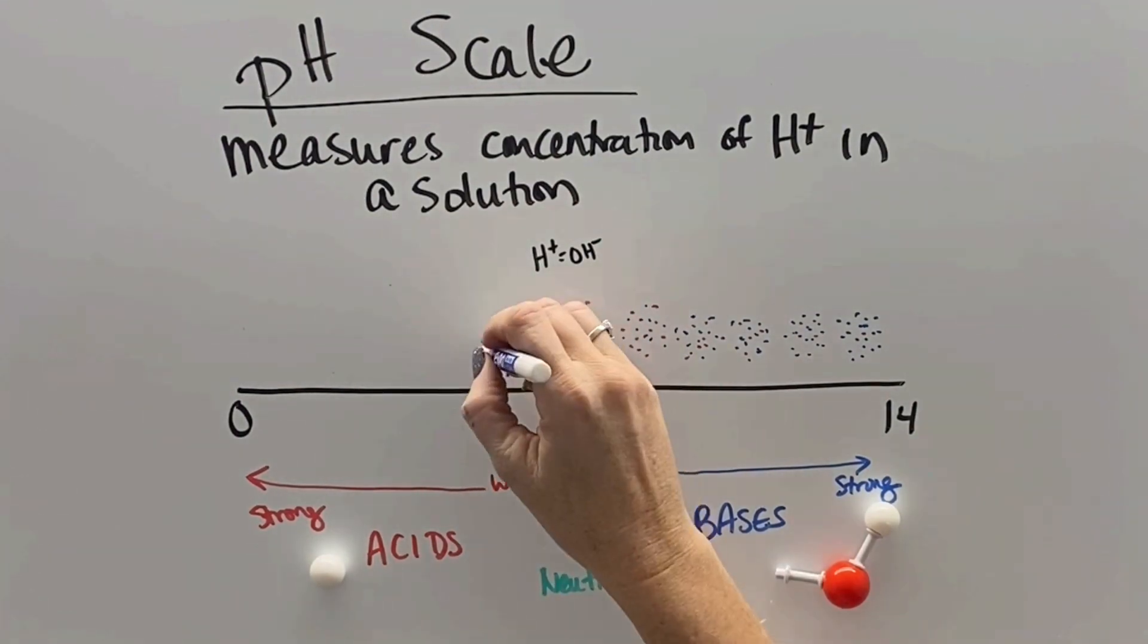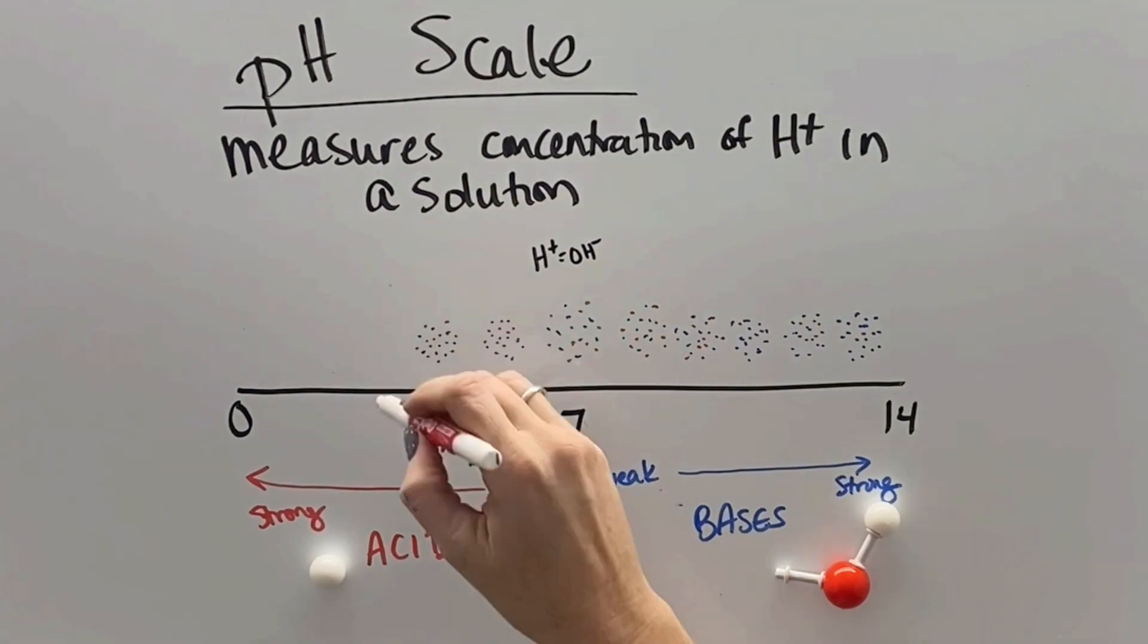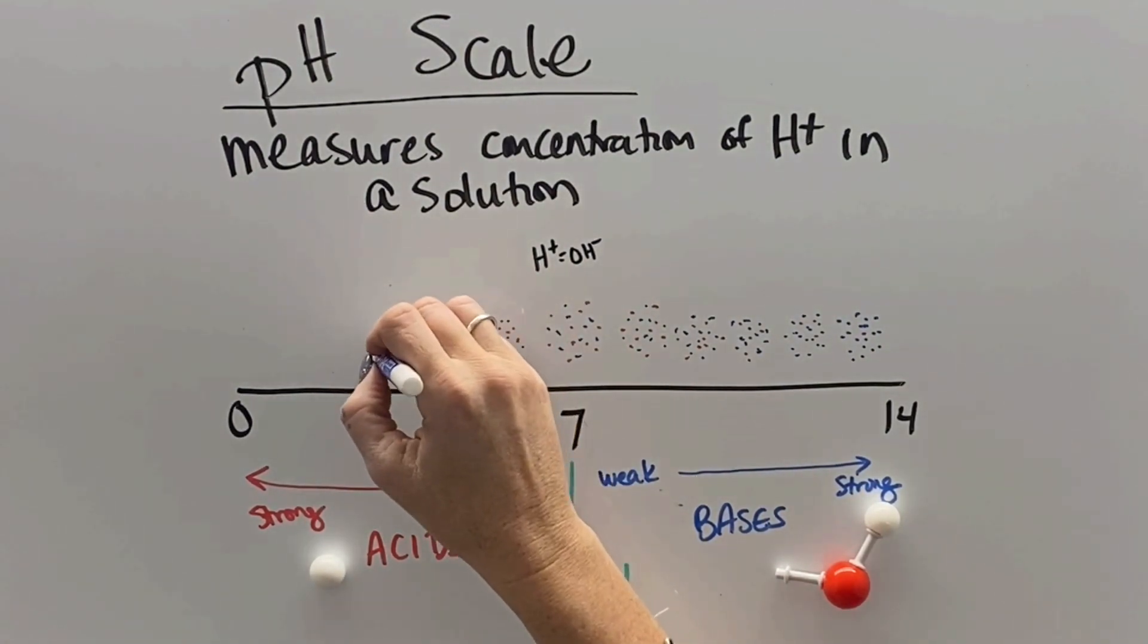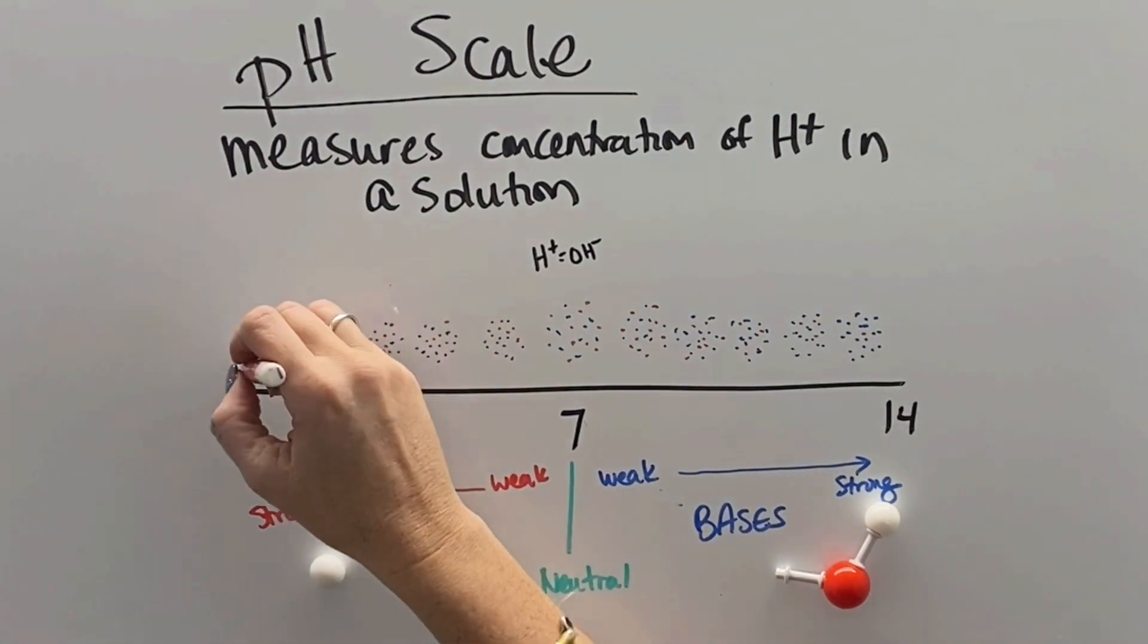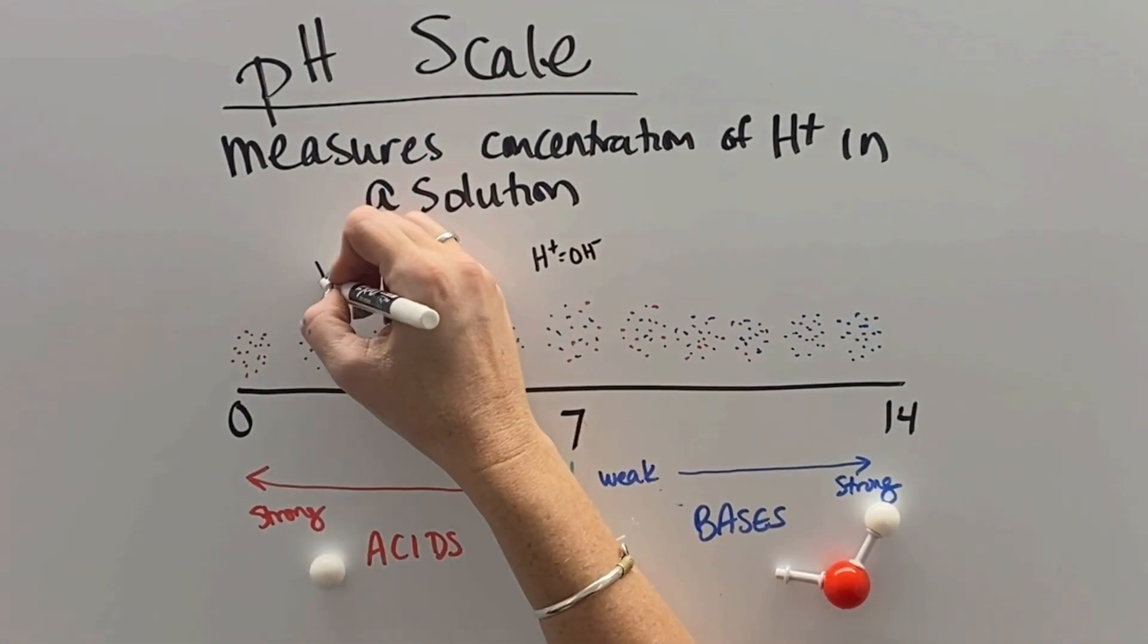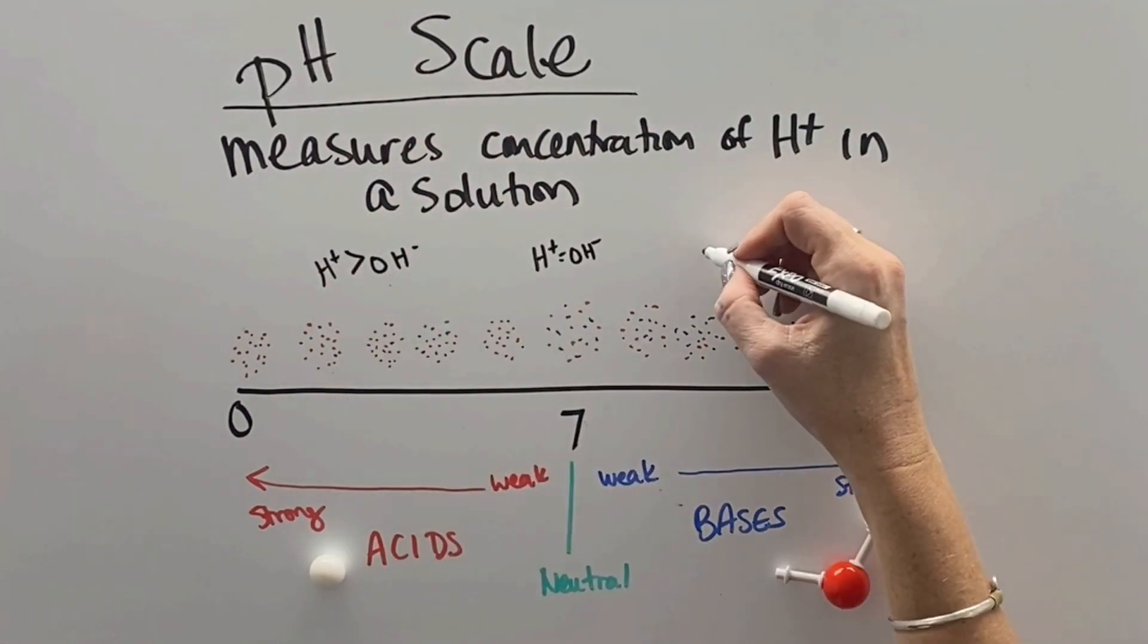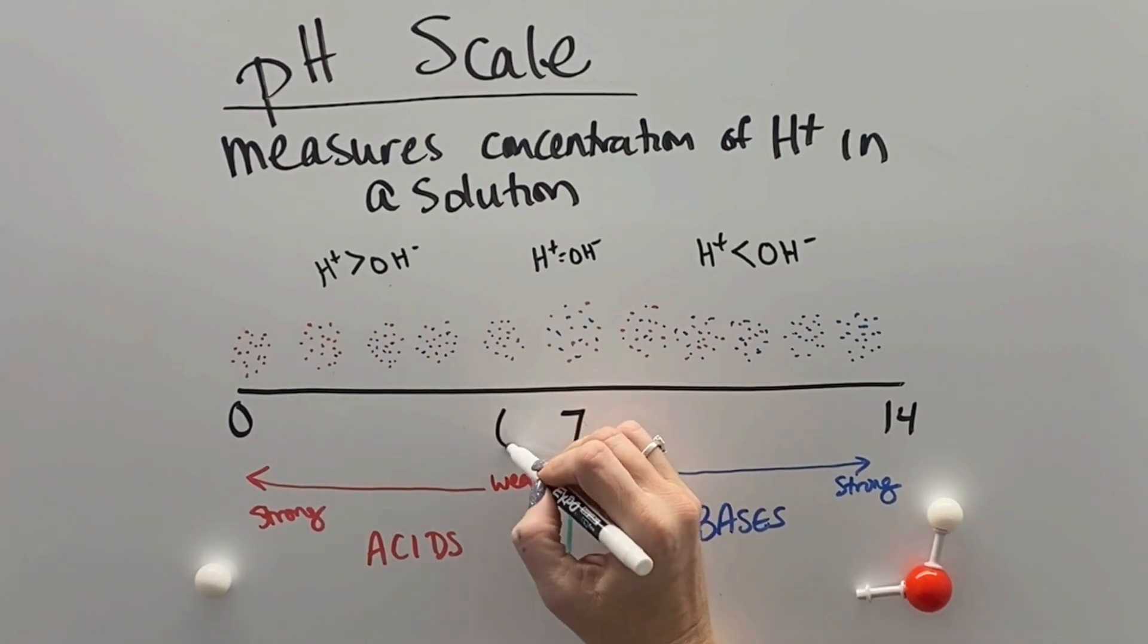And as we move the other way and the acids get stronger, the number of hydrogens start to outweigh the number of hydroxides. So the more hydrogens that you have in a solution compared to the hydroxides, the stronger the acid. The more hydroxides that you have compared to hydrogens, the stronger the base. So that's essentially what's going on with acid and base solutions.